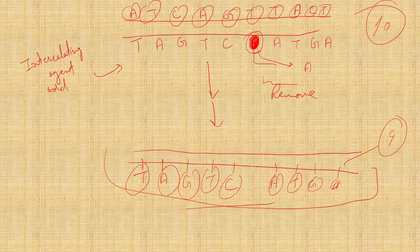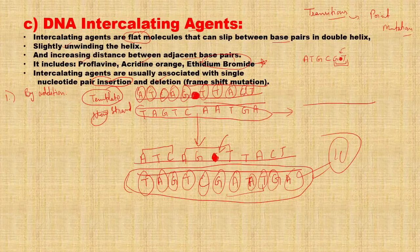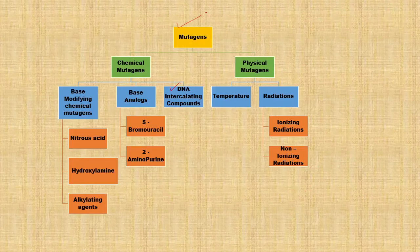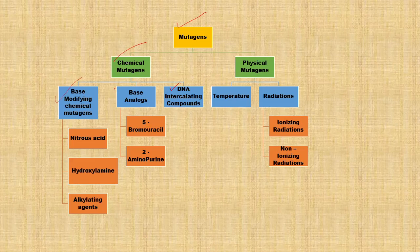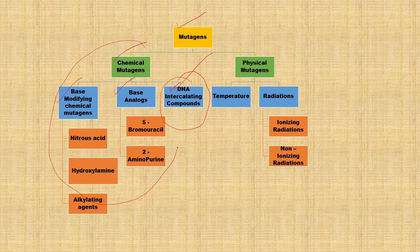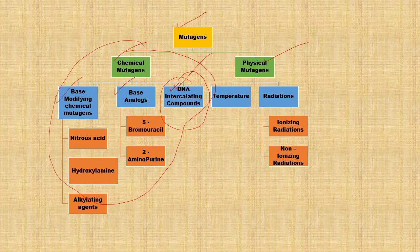So, these are the mutations caused by intercalating agents. This was your frameshift mutation by deletion. We have now completed this topic. In previous videos, we discussed chemical mutagens — base-modifying chemical mutagens and base analogs — and in this video we discussed DNA intercalating agents or compounds. In the next videos, we will take up physical mutagens. That's all for this video. Please subscribe and share the channel with your friends, and stay tuned for more videos. Thank you.